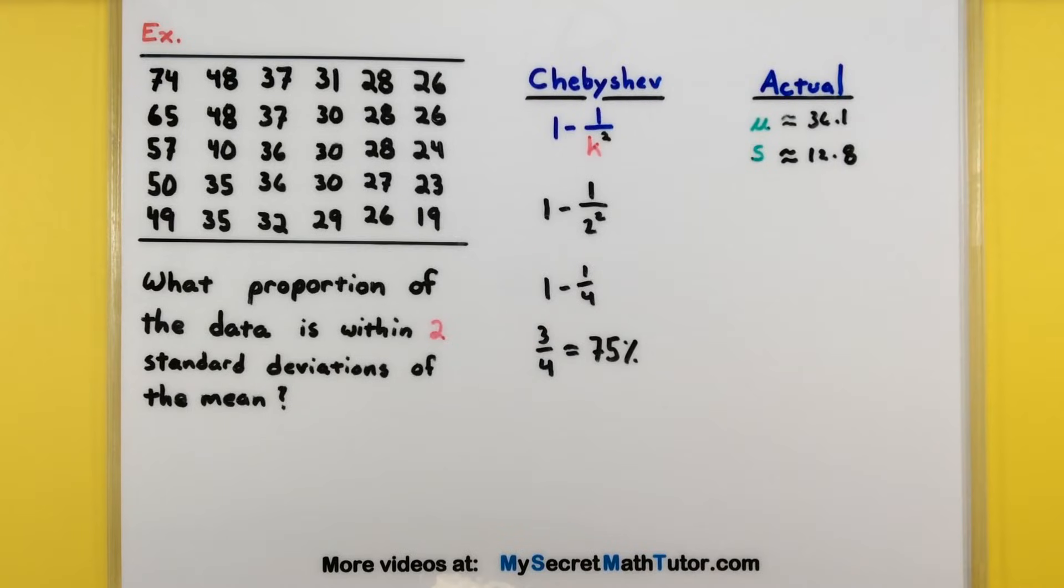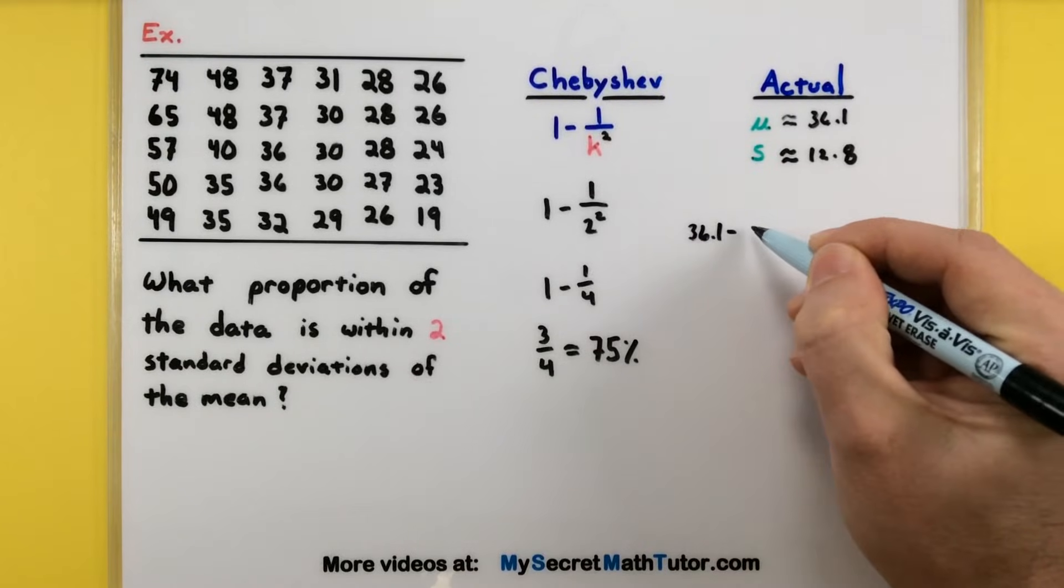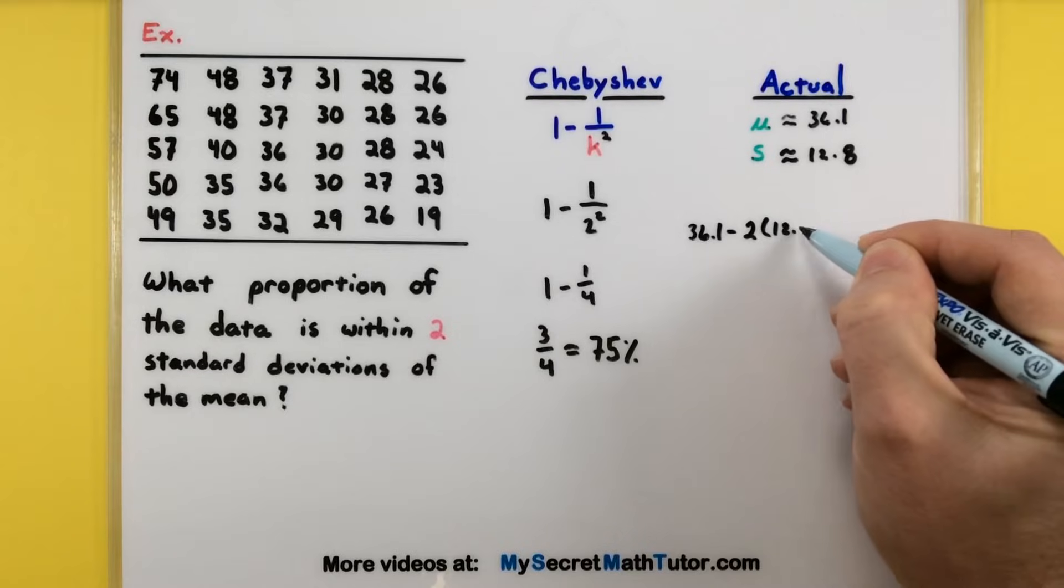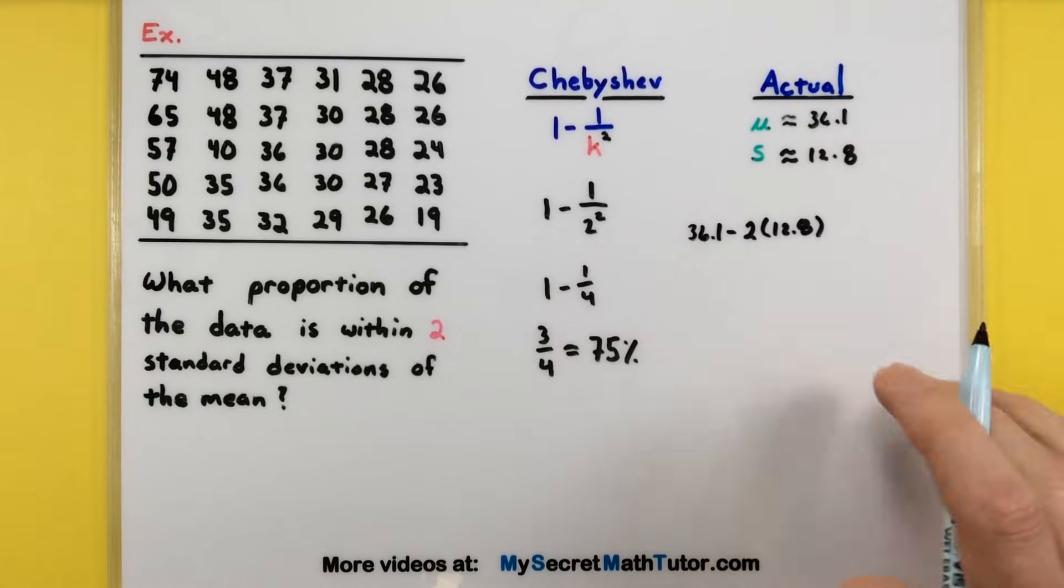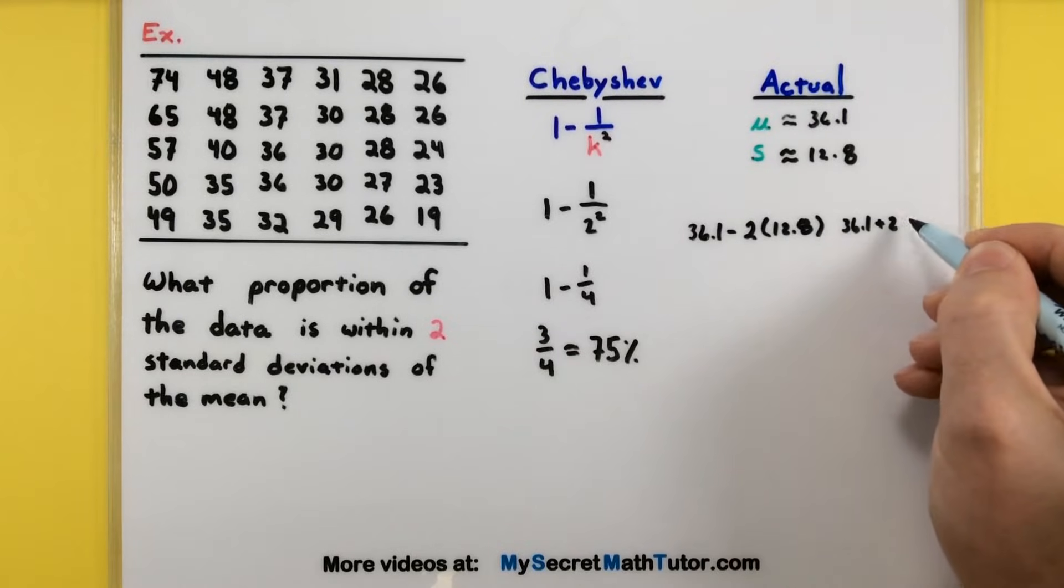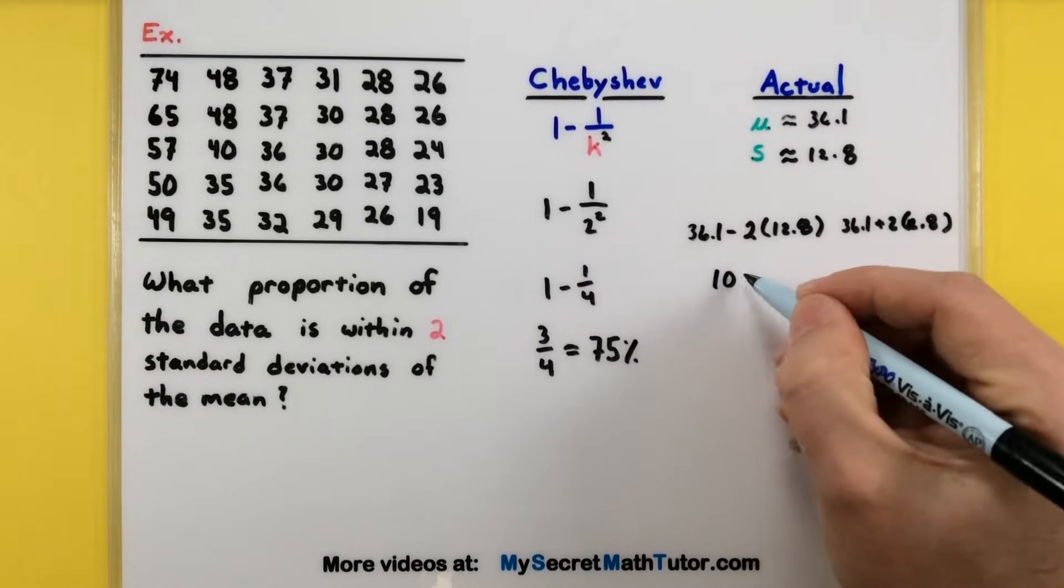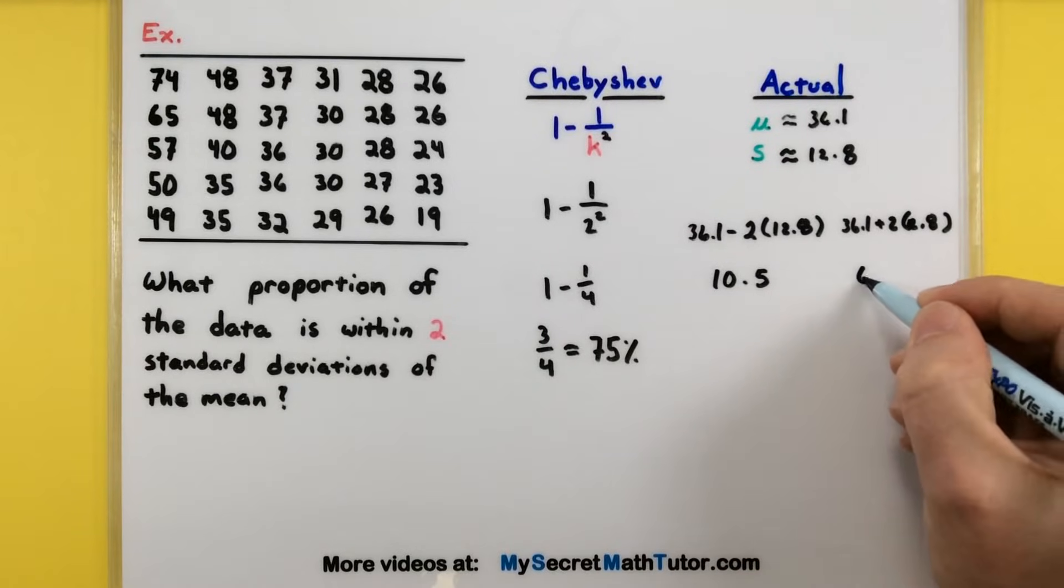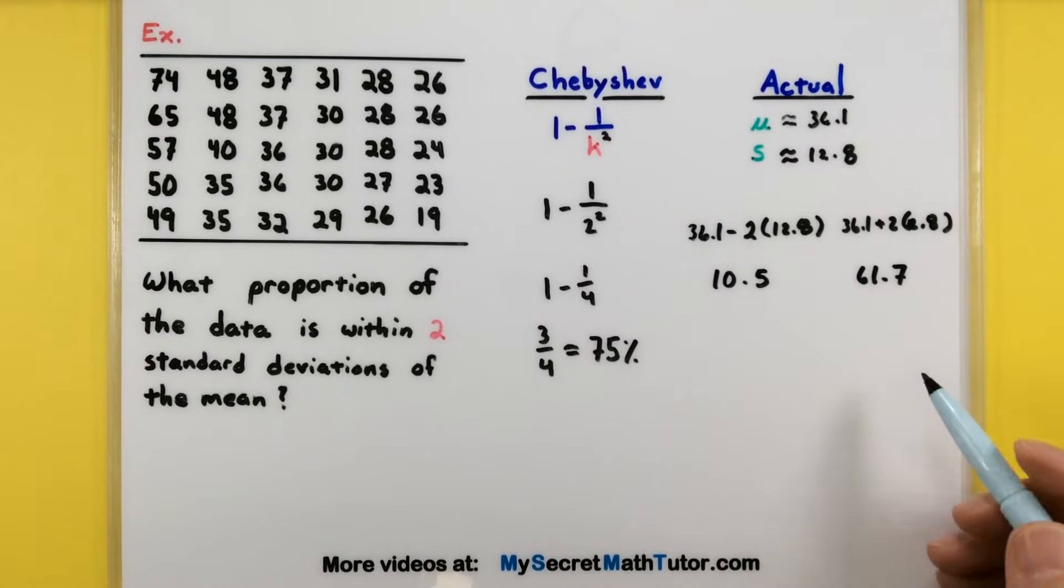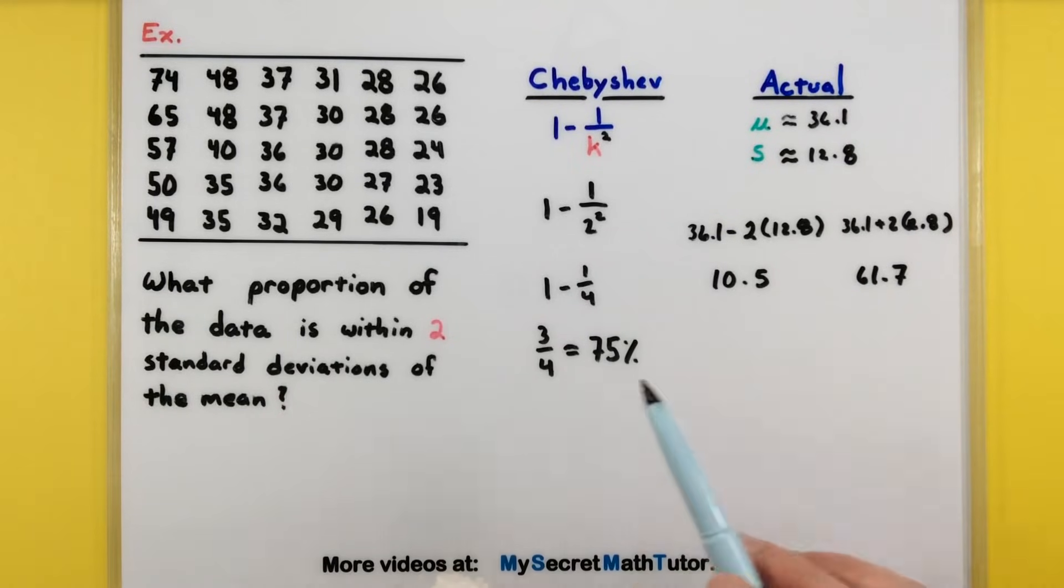So we want to know a range of values within two standard deviations. So what I'm going to look at is our mean 36.1 and we'll subtract two standard deviations. We'll also do the same thing, 36.1 and we'll add two standard deviations, so 12.8. All right, this gives me 10.5 and 61.7.